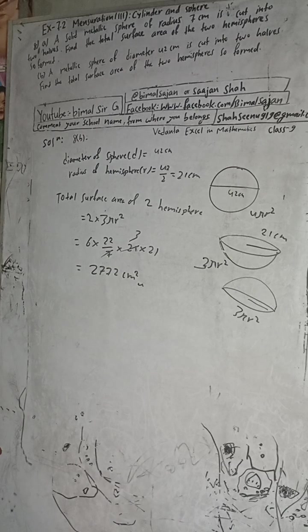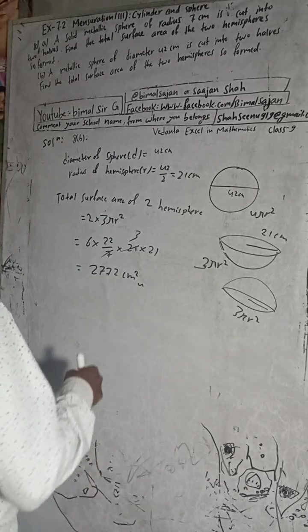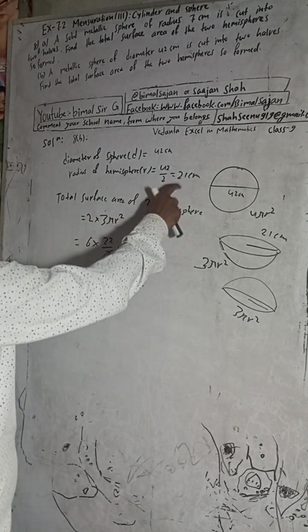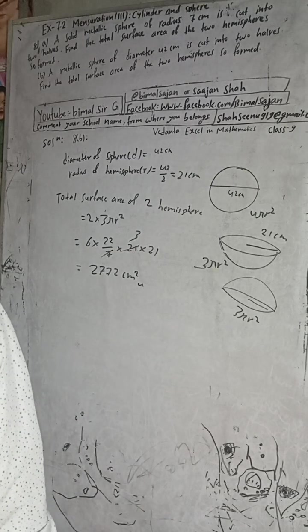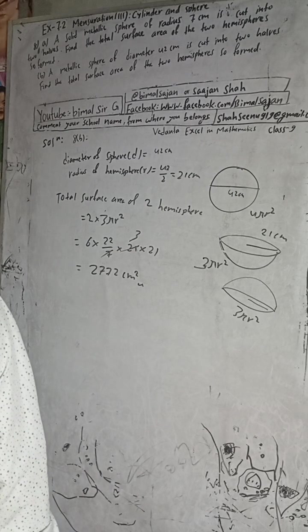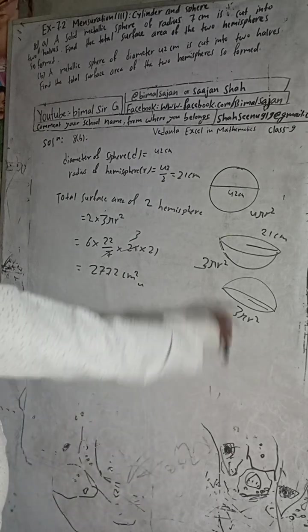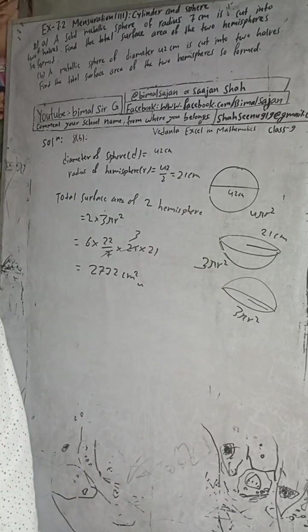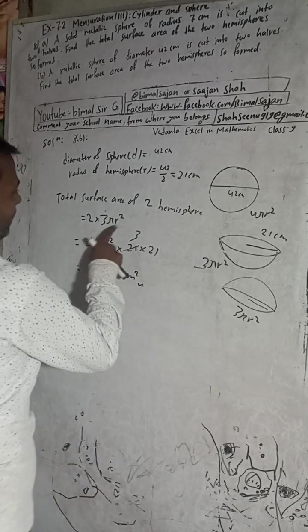A metallic sphere of diameter 42 cm is cut into two halves, find the total surface area of the two hemispheres. The diameter is 42 cm, so the radius is 21 cm.